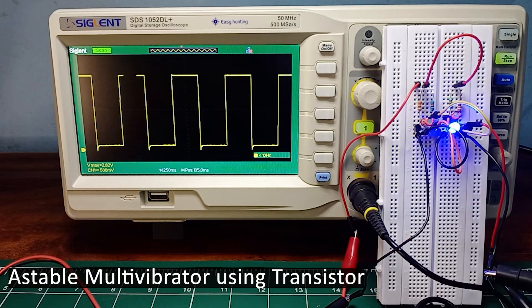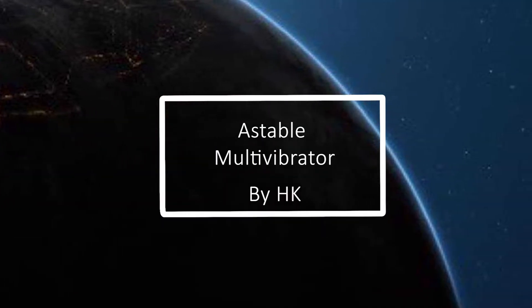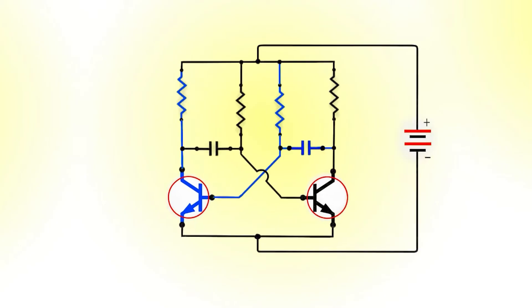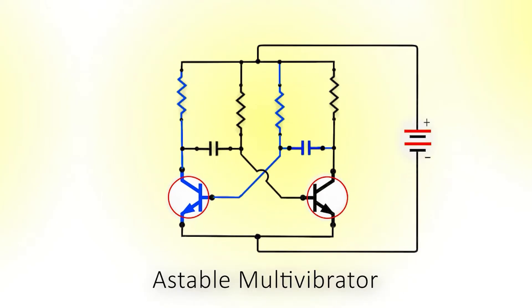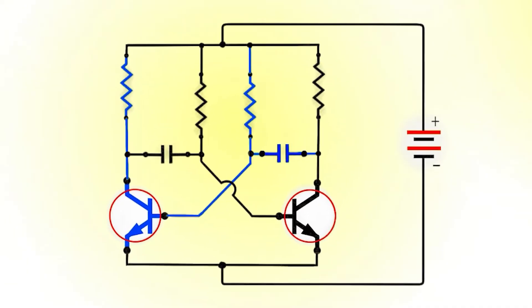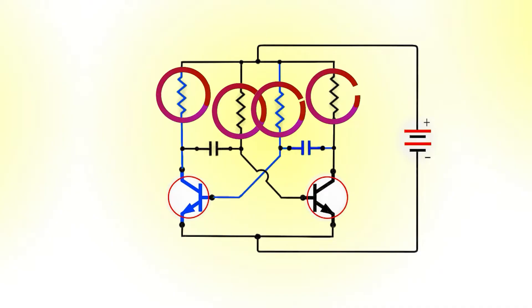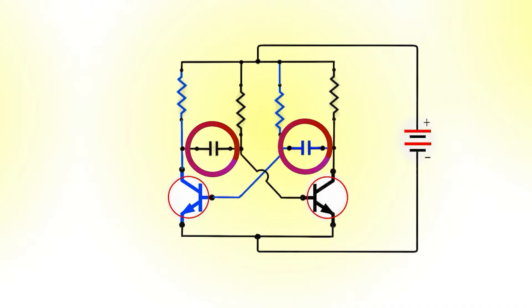Without further delay, let's get started. This is the circuit diagram of the astable multivibrator. Please don't be scared if you don't have any idea of the purpose of its components — we will understand it step by step. From observation, we see that the circuit consists of 4 resistors, 2 capacitors, and 2 transistors.